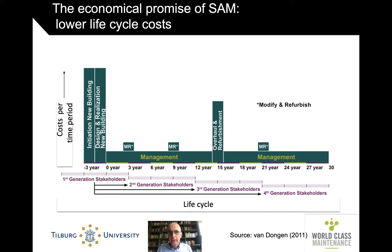Lifecycle costing is an easy concept, but not so easy as it seems. We already saw a version of this chart. The horizontal axis is time, the vertical axis is the costs. The total area that is green is, you could say, the lifecycle cost.